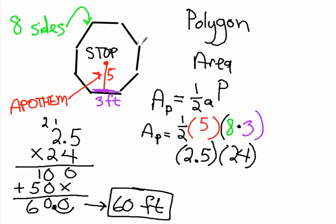Alright, so when you're looking for the area of a polygon, first thing you need to know is the apothem, right here, the five. Then you need to know how long each side is, and then you need to know the number of sides. You multiply how long each side is, which is three, right here.